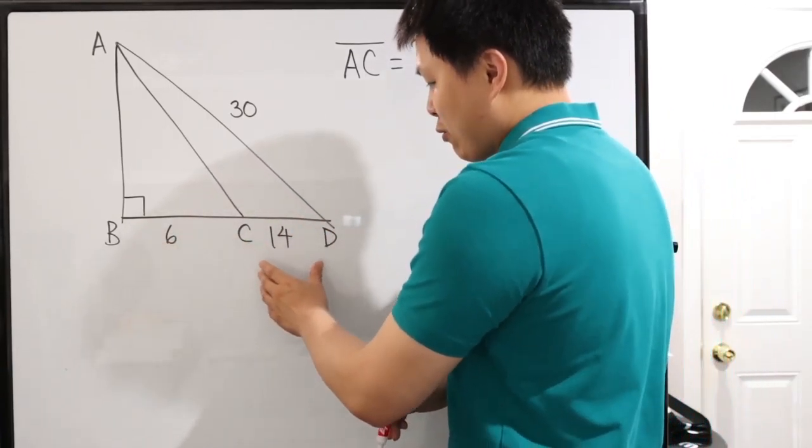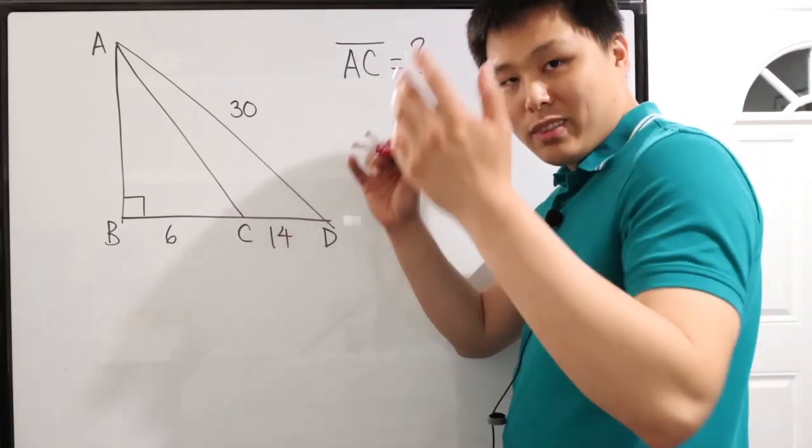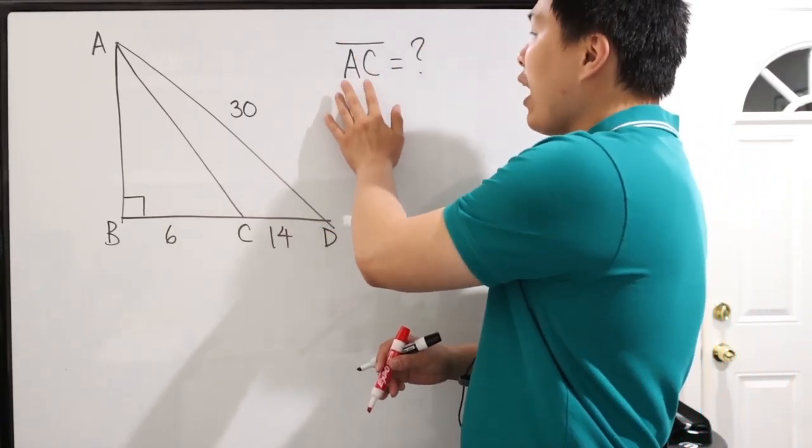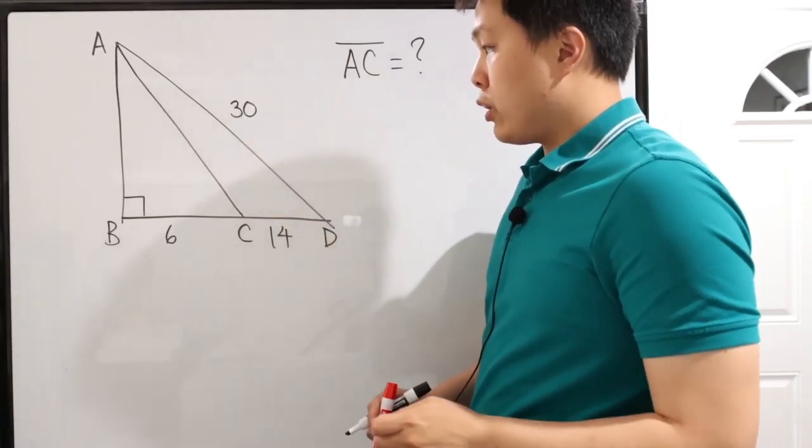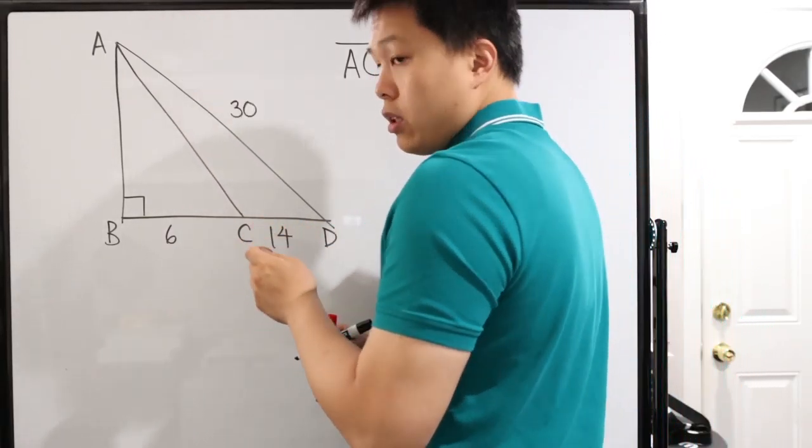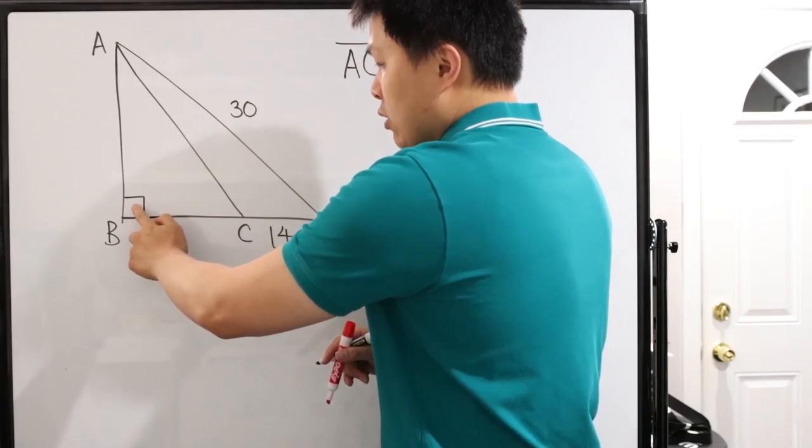Yes, here's six, here's 14. 14 should be a lot longer, but hey, whatever. Here we have AC. That's what we're looking for. This length right here, AC. Now, in order to find that, we have 6, 14, and this hypotenuse right here, 30. Our key to solving this problem is this little guy right here.